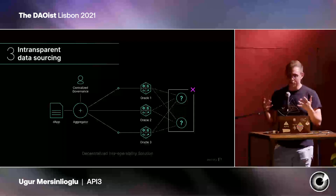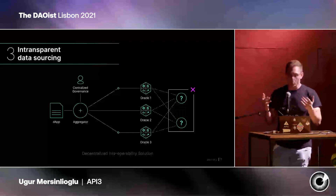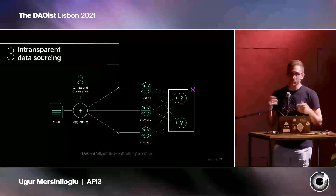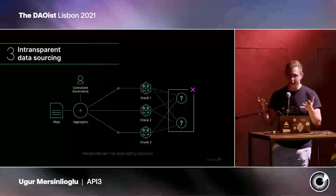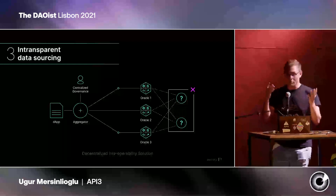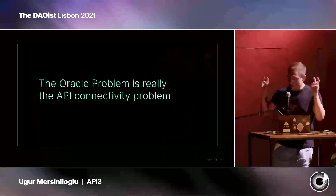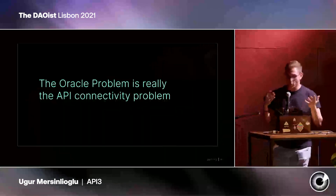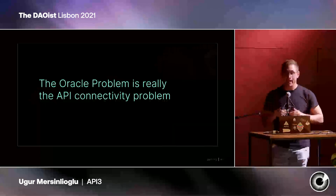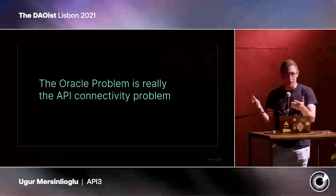It would be pretty inefficient if they all got their data from one source. So our solution to this inefficiency would be to simply get the data right from the source — practically to call APIs directly over the blockchain instead of relying on a middleman. For this reason, we believe the Oracle problem is actually the API connectivity problem. Because if you could call an API, the source directly, over the blockchain, you would do so.